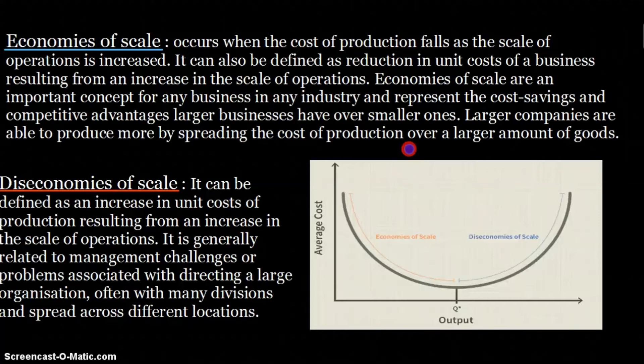Economies of scale offer a competitive advantage because unit costs are reduced. One common example is purchasing economies: if you buy in bulk — say 100 items at a time from a supplier — the supplier is likely to offer a discount, reducing the unit price. For instance, if one product normally costs $10, buying 100 at a time might bring the unit cost down to $9 or even $8.